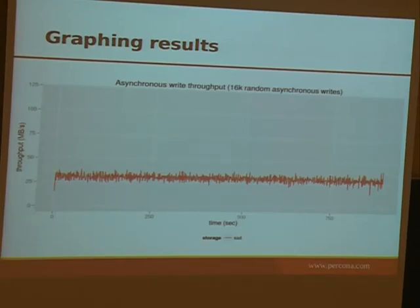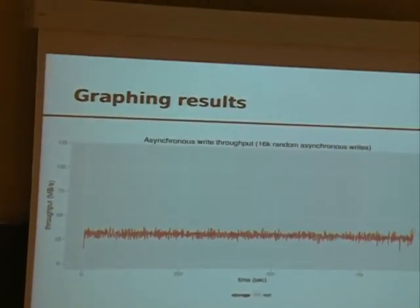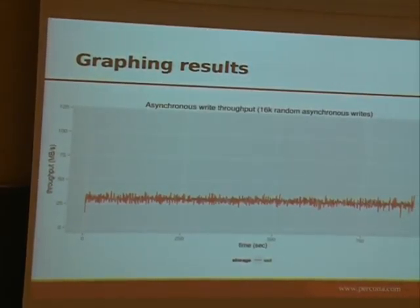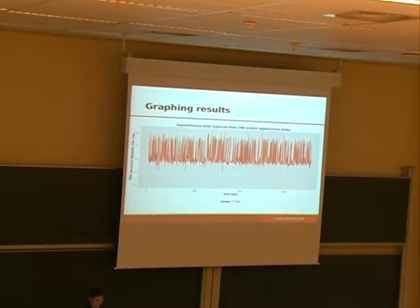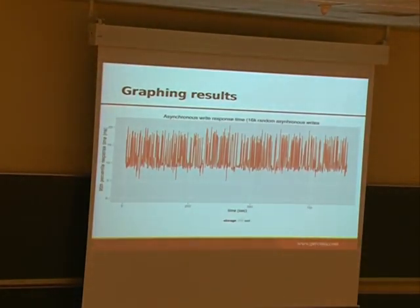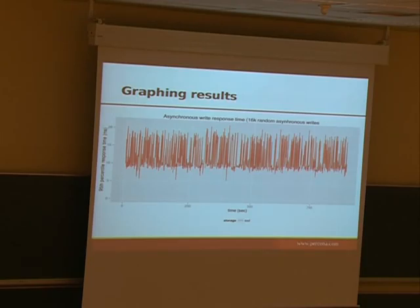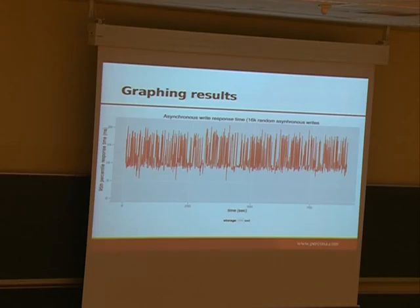This is a graph of the read throughput of my laptop in case of asynchronous IO, and we decided that the number of streams doesn't matter much. And this is a graph of the response time in milliseconds. Let's stop a bit here — is this graph good? What is not visible from this graph is that the response time is somewhere between 10 and 20 milliseconds. But is it more like 10? Is it more like 20? What's the distribution?